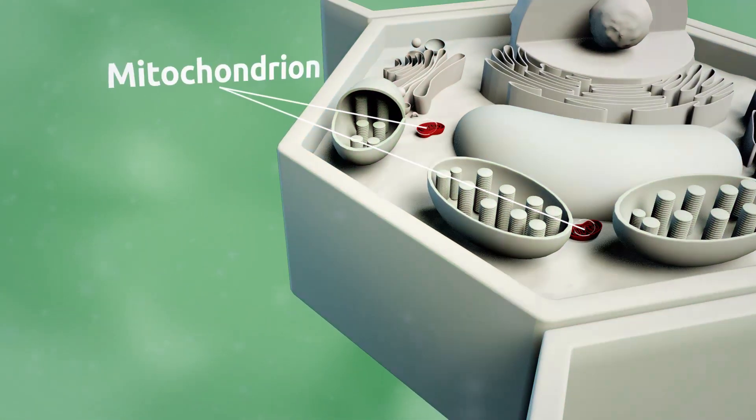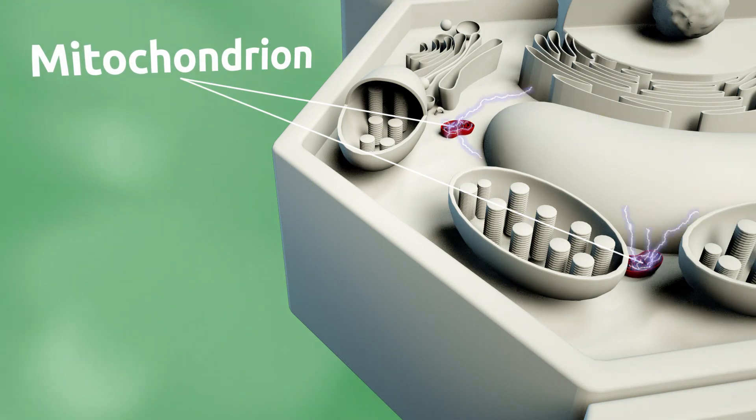Chlorophyll also plays an important role in photosynthesis. A mitochondrion is the organelle in charge of producing the energy in the cell.